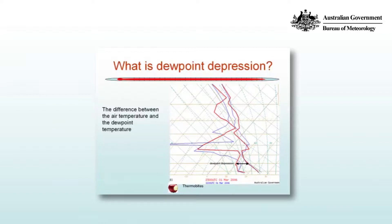We can use the dewpoint depression as a proxy for relative humidity and the potential presence of stratiform cloud. Stratiform cloud is layer cloud where there are no, or very weak, convective motions within the cloud — it is layer or streaky cloud.